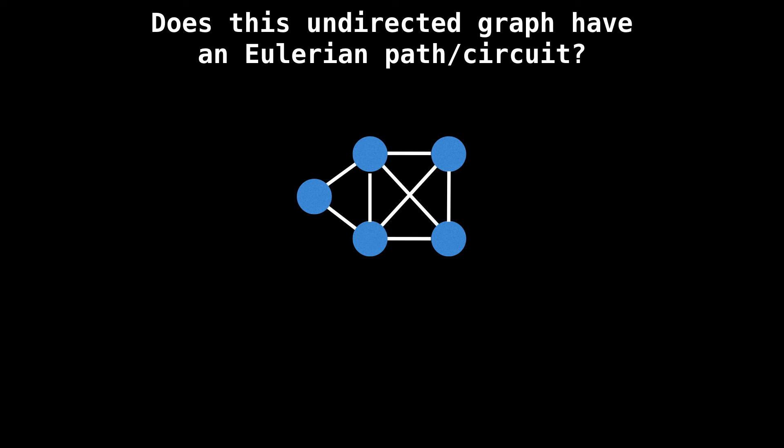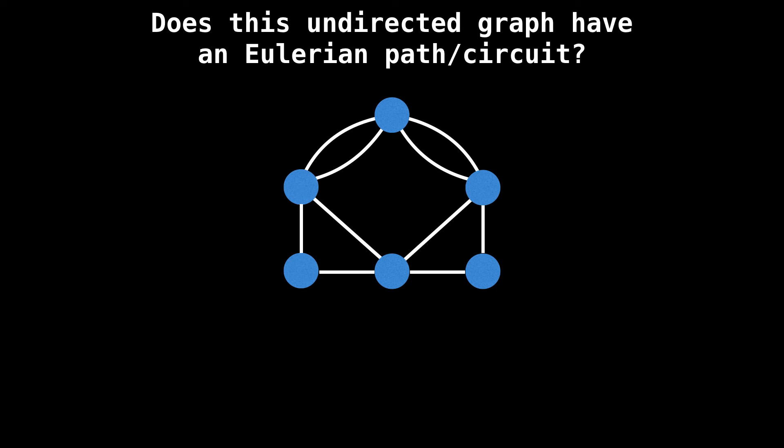How about this graph? Again, feel free to pause the video. This graph has an Eulerian path and the green nodes represent the valid start and end nodes for the Eulerian path.